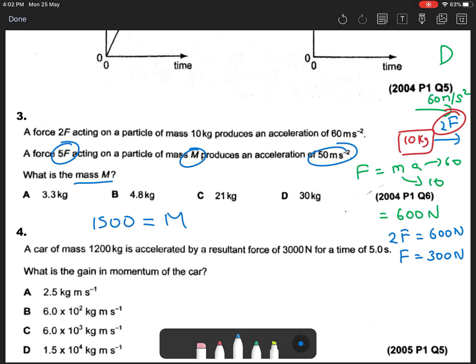This equals M times A, right? A is 50 meters per second squared. So what is my M? M is 1500 Newtons divided by 50, which equals 30 kilograms. So the answer is D.